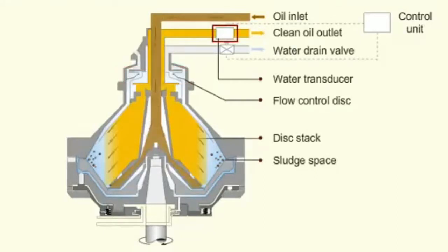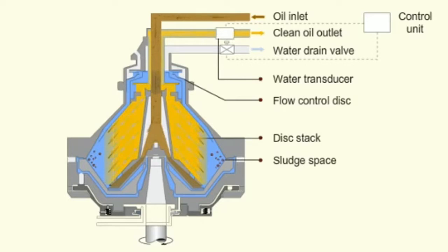A water transducer is situated on the oil outlet side. It senses the water content and activates the control unit. When the accumulation of separated water increases, the water approaches the disk and part of the water is carried over with the clean oil. The water transducer senses the water in the oil and sends a signal to the control unit.